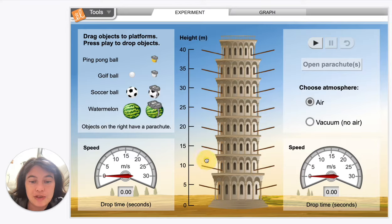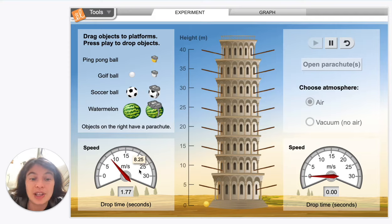If we drop this from a height of 10 meters, you can see the velocity increased to 8.25 meters per second. So it got a bit faster, and it took 1.77 seconds to fall.